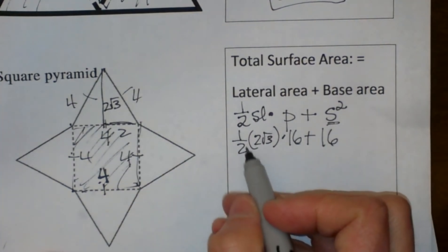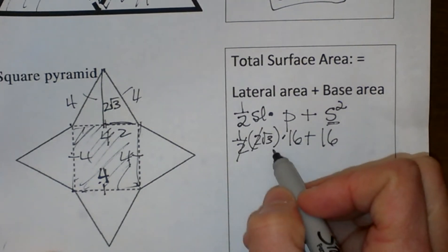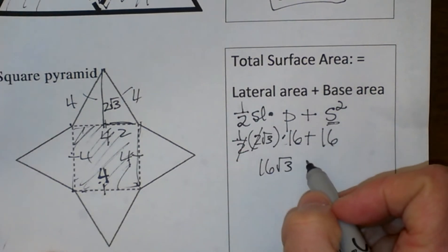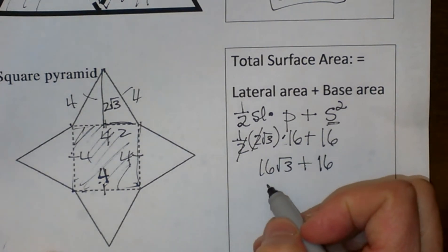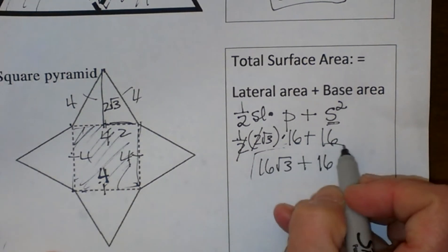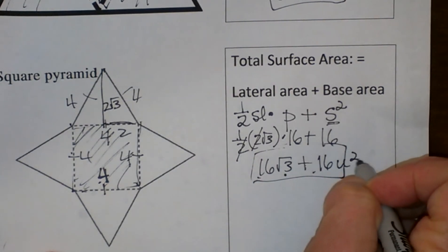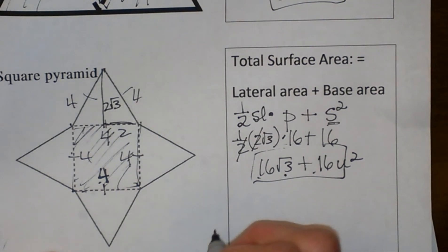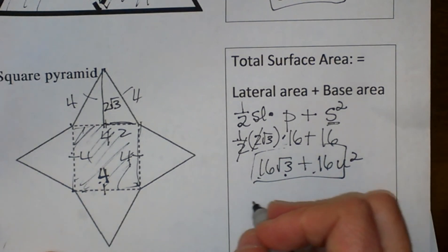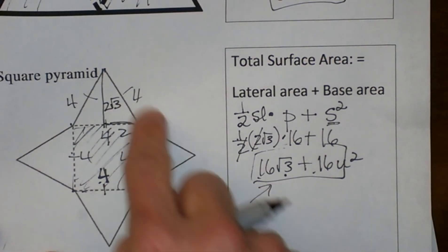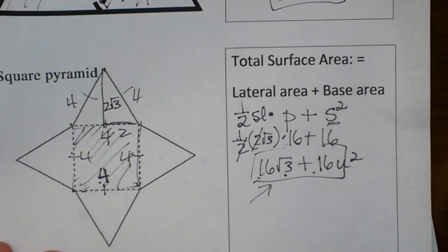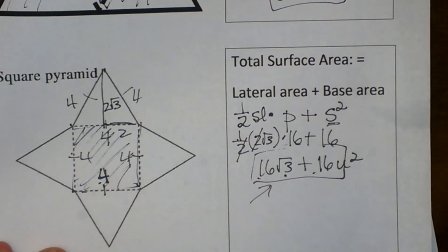Now let's simplify, half of 2, well those cancel, so over here I have 16 root 3 for the lateral area, and then I am going to add 16 for my base. Now unless you want to write a decimal, this is actually the answer, it is just 16 root 3 plus 16 square units, and if you want to change that to a decimal you can, you just take the square root of 3 times 16 and add another 16 to it. But there is your answer for the surface area of this square pyramid. Hope this video was helpful on solving surface area.